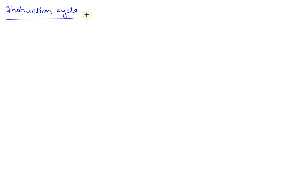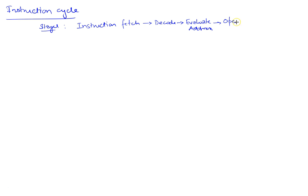In this video I want to talk about the instruction cycle on LC3. The instruction cycle is made up of these stages: instruction fetch, followed by decode, followed by evaluate address, followed by operand fetch, execute, and store result.